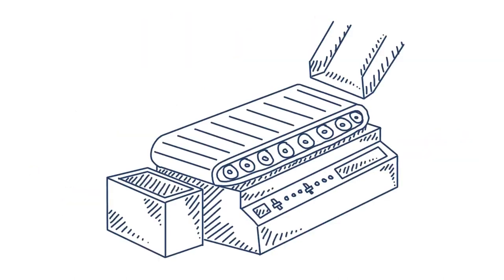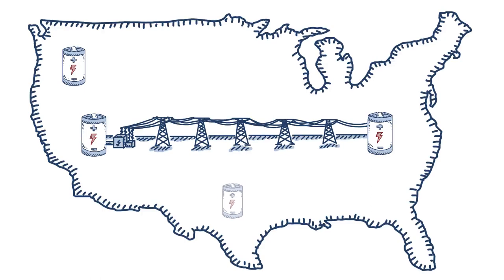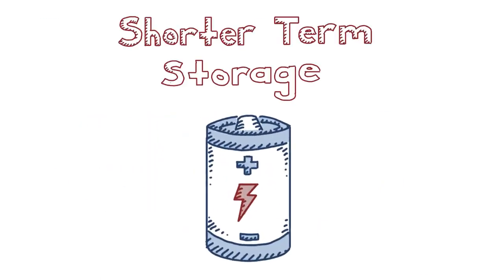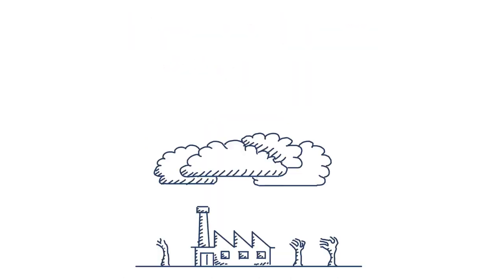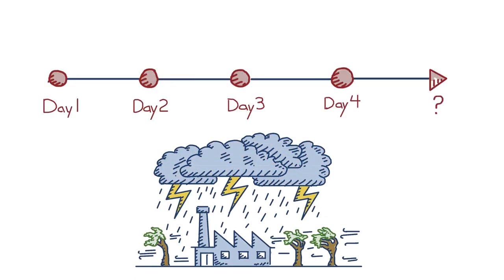We already see critical supply chain challenges with lithium-ion, yet we need exponentially more supply to accommodate enough storage to support a reliable grid. Lithium-ion batteries work best for shorter-term storage. To store vast amounts of electricity, like during extended storms, we need new, cost-effective technologies, batteries capable of storing electricity for multiple days.